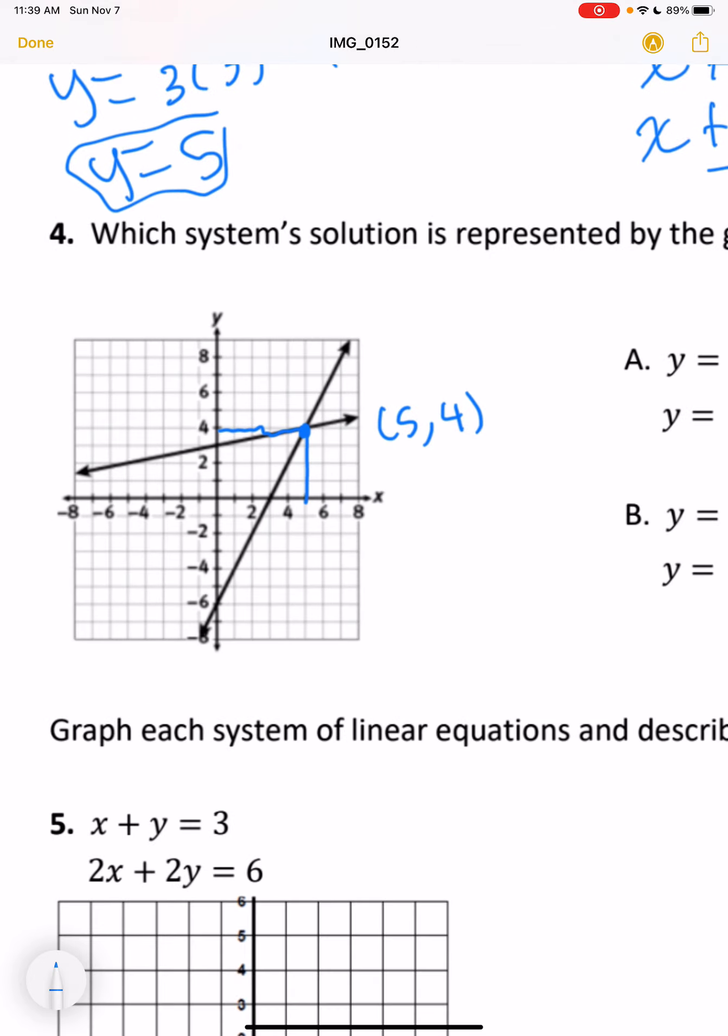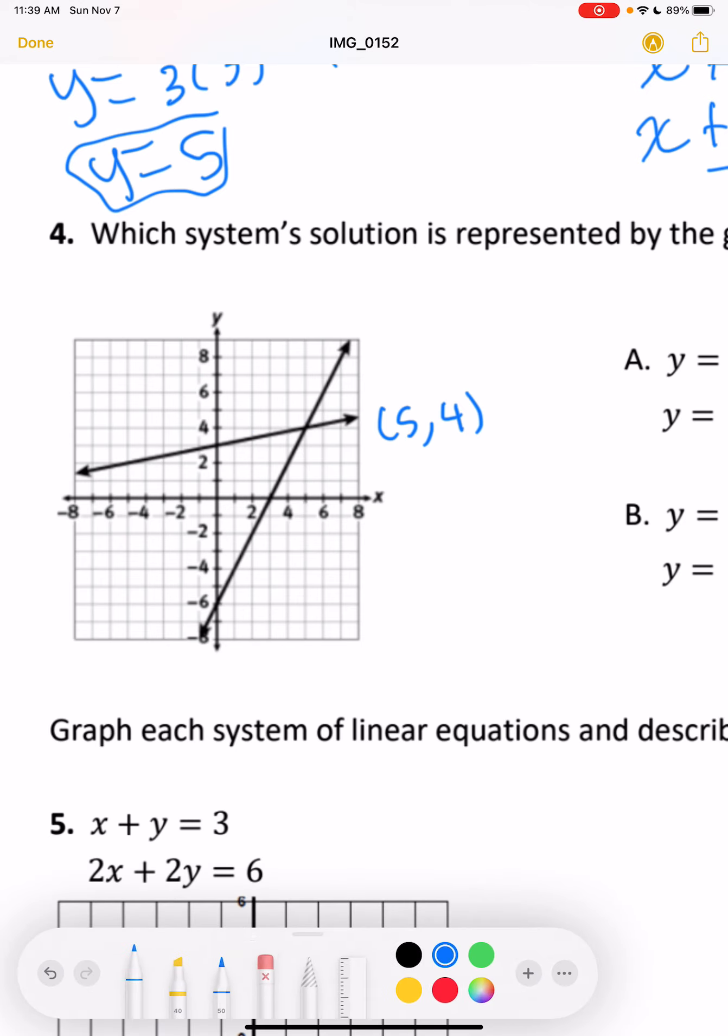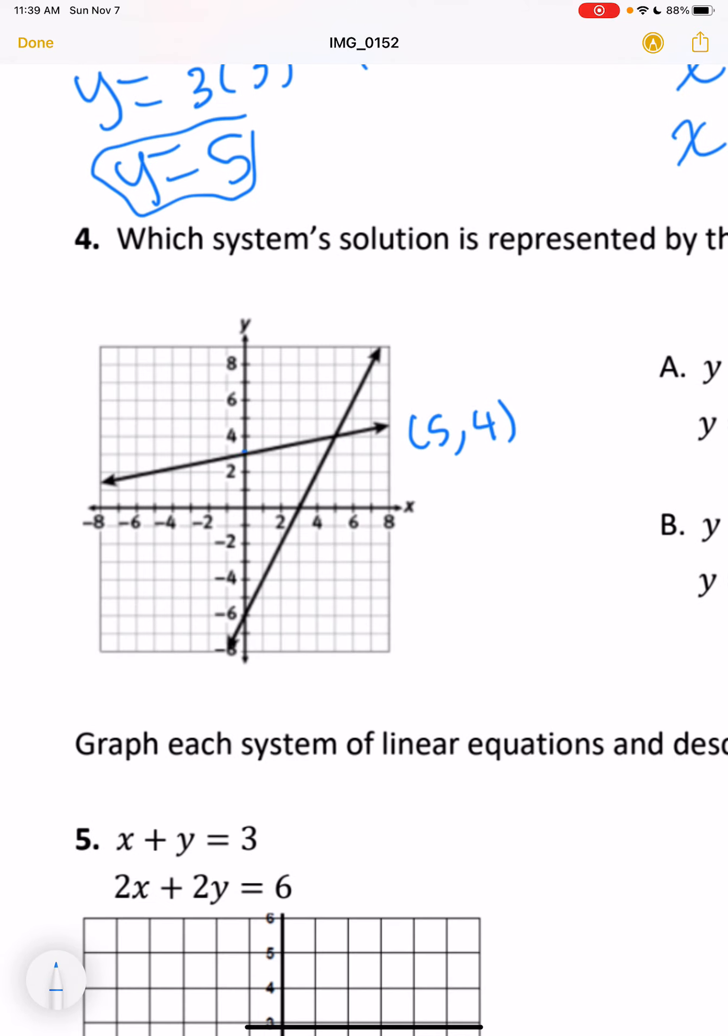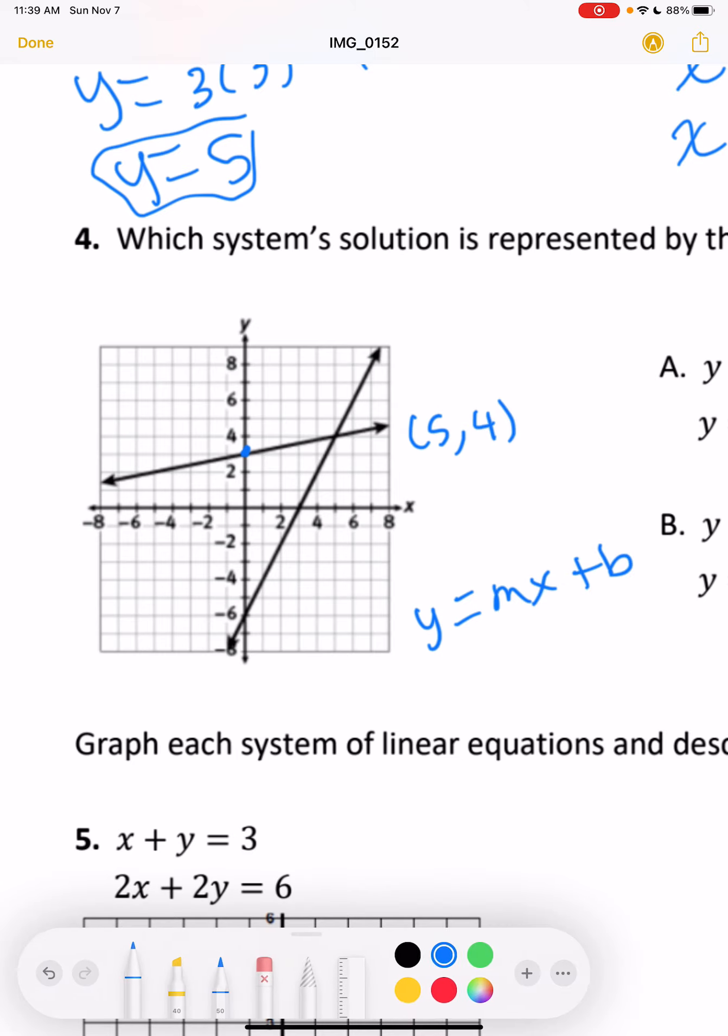But we're going to do it a slightly different way. So we are actually going to just write the equations for each of our lines. So we're going to take our first line, this one right here, and write a y equals mx plus b equation. So our y-intercept for this line is 3, because that's where it starts.